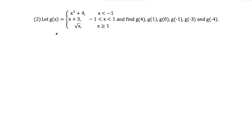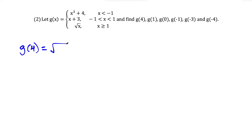Question two: we have g of x and we want to find these function values. First, g of four — we ask where does x equals four belong. X equals four is greater than or equal to one, so we plug four into this piece: square root of four, replacing x with four, and the square root of four is equal to two. So g of four equals two.